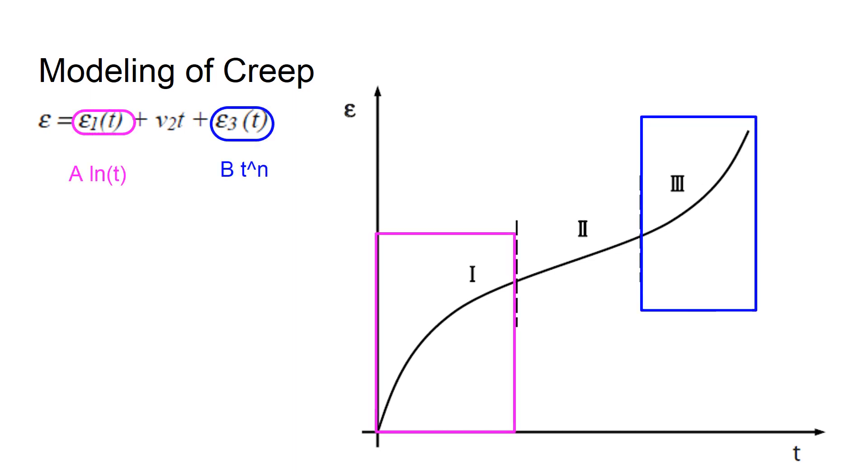The first part or first phase of the creep model is a logarithmic function which rises with a decreasing slope. And the next part, that is phase 2, is basically a linear function. And the last phase is a polynomial.